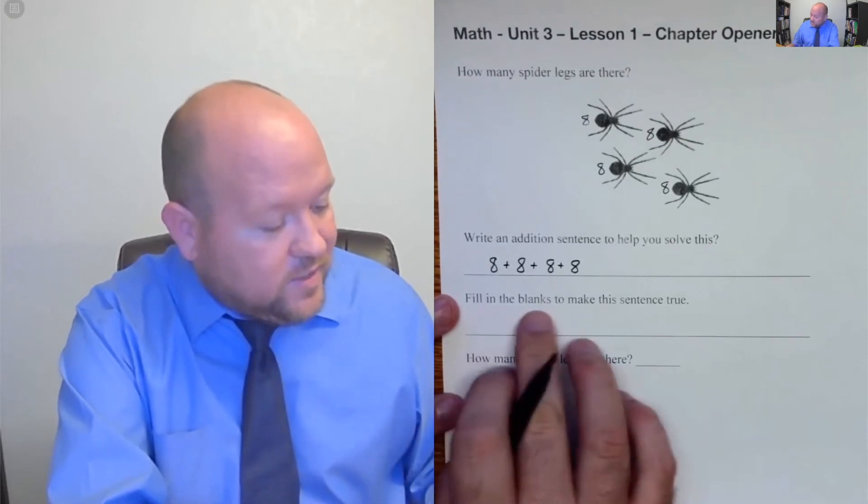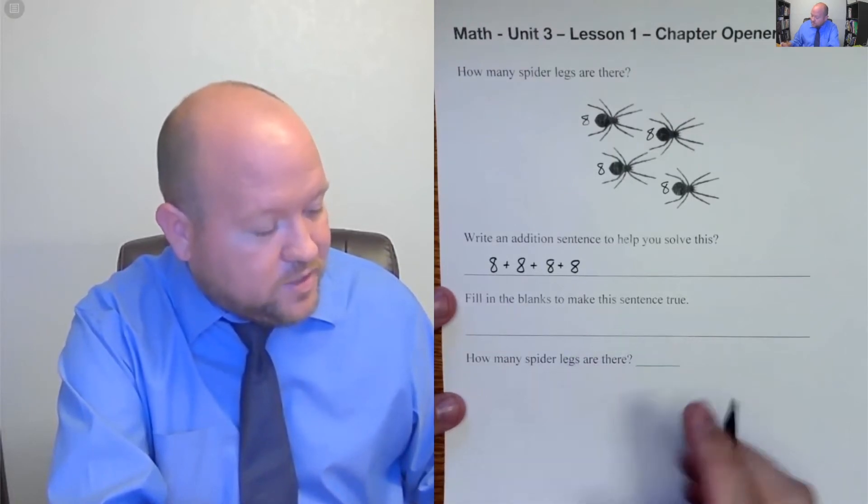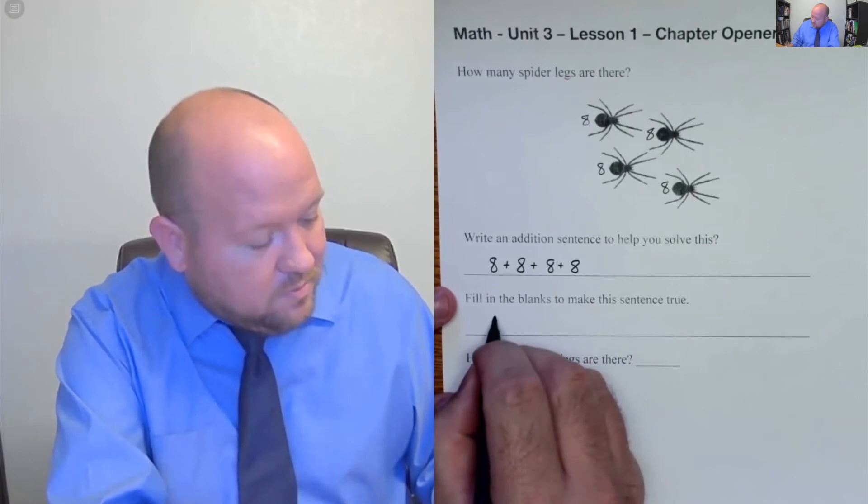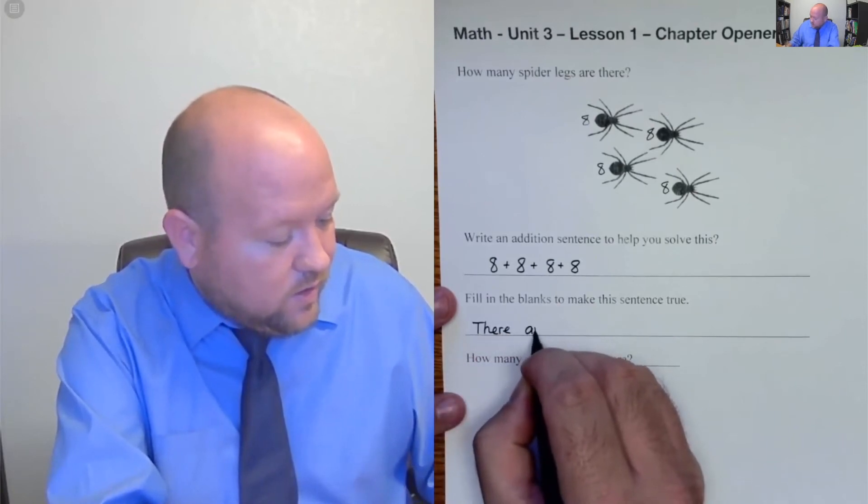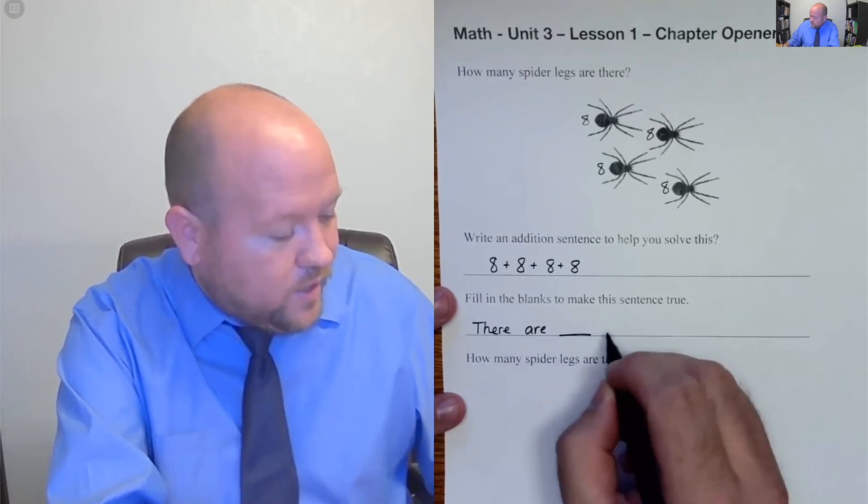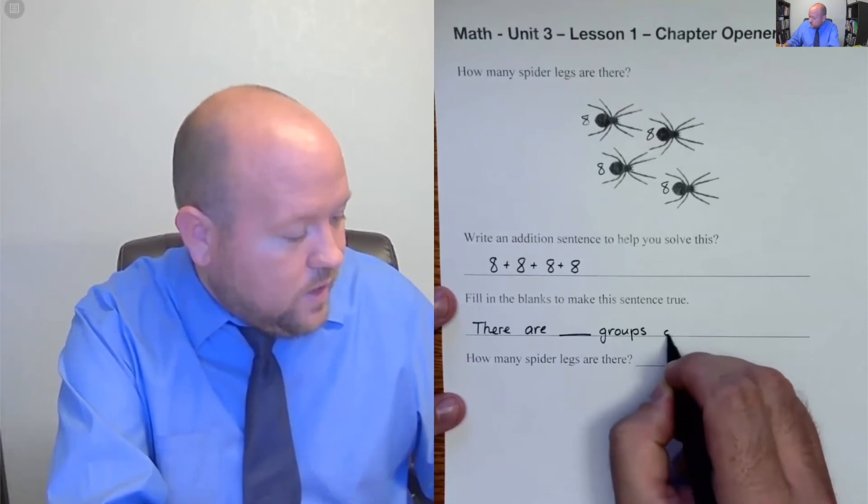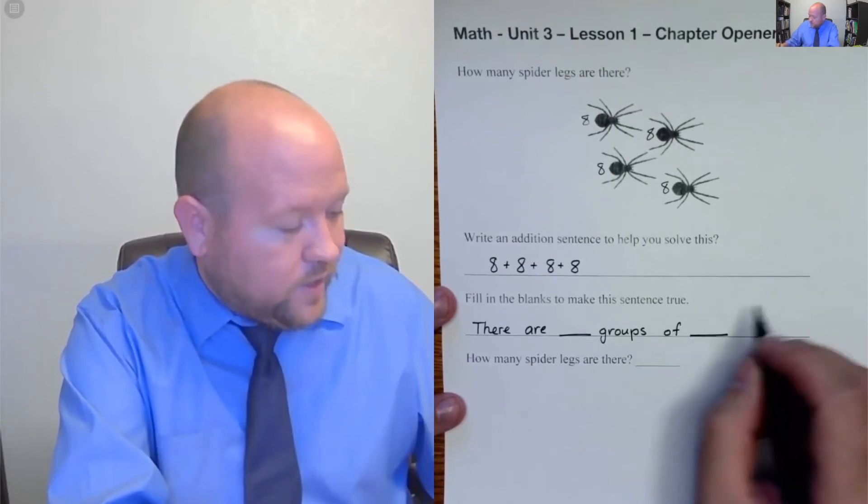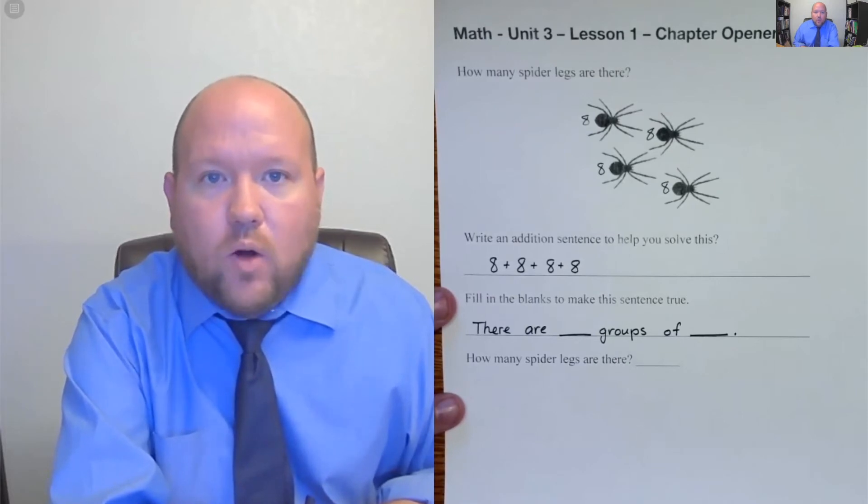Next down here says fill in the blanks to make this sentence true. There are blank groups of blank. So there are how many groups?